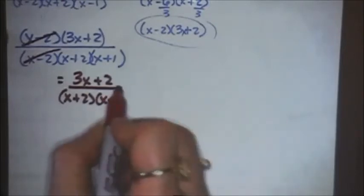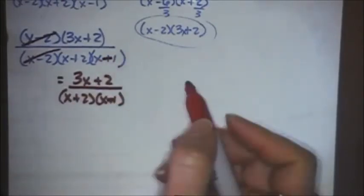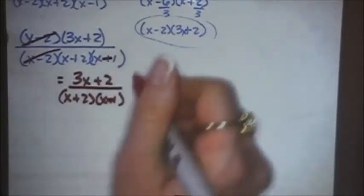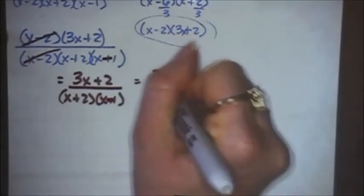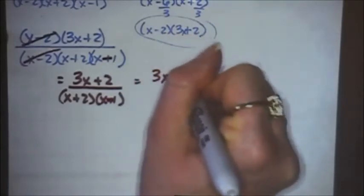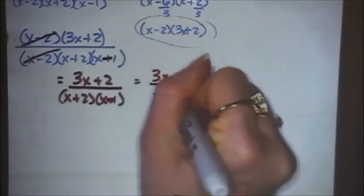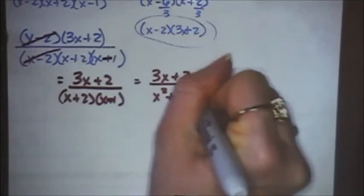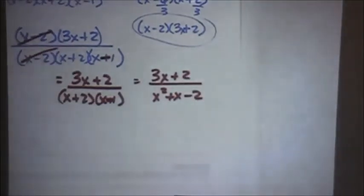Actually, it's x minus 1, I misread that. So the final answer is 3x plus 2 over x plus 2, x minus 1. Or you can FOIL that out and get 3x plus 2 over x squared plus x minus 2. That's how you add and subtract rational expressions.